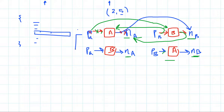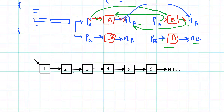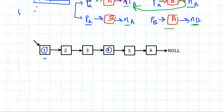Changing these pointers takes constant time, so this should be our approach. There are a few scenarios to handle. One scenario is when one of the nodes being swapped is the head node, in which case there is no previous node - previous node is null - and we handle that case separately.